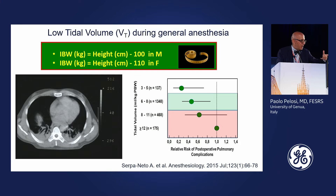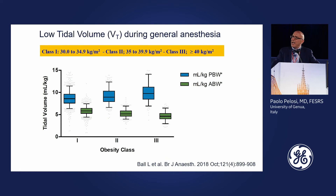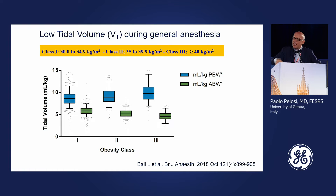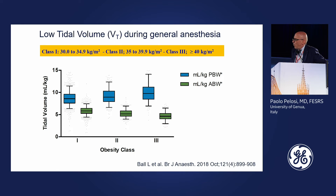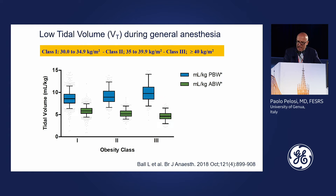This rule should be in our brain or printed in the operating room. If future ventilators also include an alarm for this, it would be extremely useful. We know that obese patients are more likely to be ventilated with higher tidal volumes on predicted body weight — up to 15 mL/kg predicted weight — when clinicians think they are ventilating appropriately based on actual body weight.